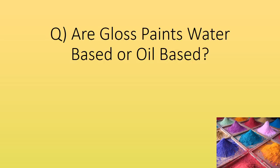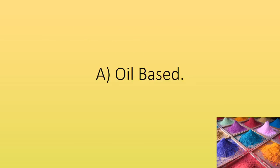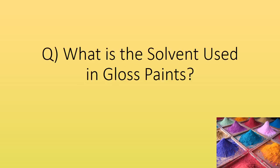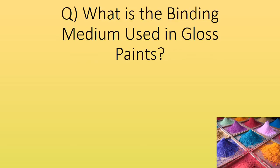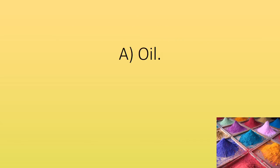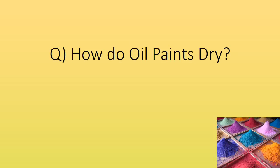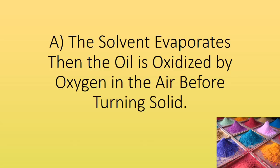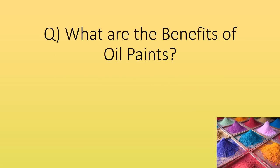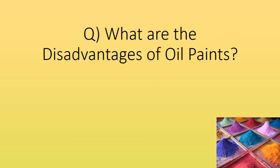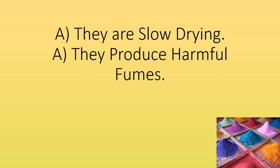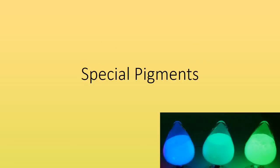Are gloss paints water-based or oil-based? Oil-based. What is the solvent used in gloss paints? Organic compounds that dissolve in oil. What is the binding medium used in gloss paints? Oil. How do oil paints dry? The solvent evaporates, then the oil is oxidized by oxygen in the air before turning solid. What are the benefits of oil paints? Glossy, waterproof and hard wearing. What are the disadvantages of oil paints? They are slow drying and produce harmful fumes.